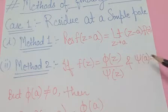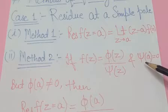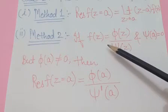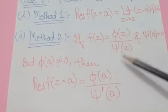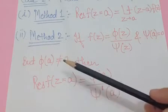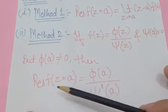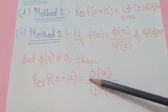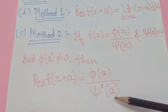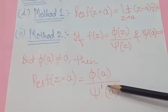This is a very easy method to find the residue at a simple pole. But if the denominator value becomes zero when you put the pole value, then use the second method. In Method 2, if your function is in the form φ(z) upon ψ(z) as a fraction, the denominator is zero at the pole, and the numerator value at the pole is non-zero.